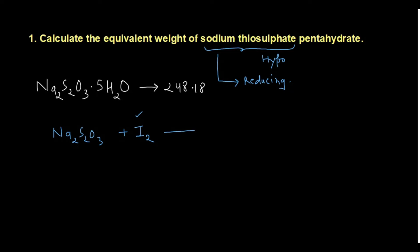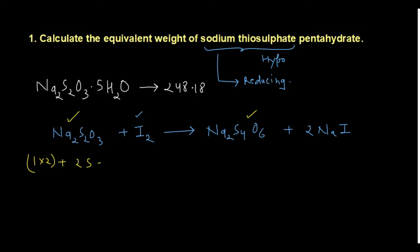The reaction produces Na₂S₄O₆ and two sodium iodide molecules. To find the oxidation state of sulfur in Na₂S₂O₃: sodium is +1, present twice, so 2(+1) + 2(s) + 3(−2) = 0. Solving gives s = +2, so sulfur is in the +2 oxidation state in sodium thiosulphate.